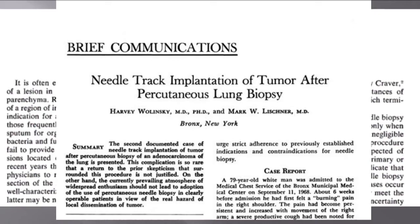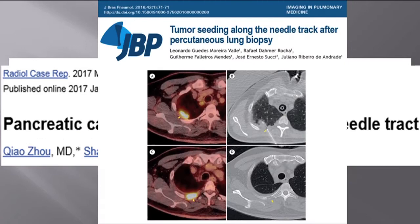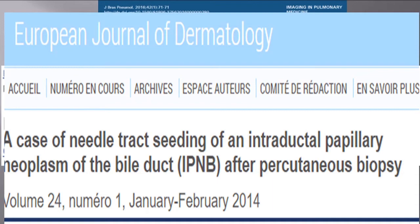The second case report was published in 1969 in the Annals of Internal Medicine, reporting similar findings with seeding after biopsy of a patient that ended up having lung adenocarcinoma. And ever since then there have been numerous case reports — for instance, transitional cell seeding, pancreatic cancer seeding, lung tumor seeding, as well as bile duct. We're not going to go into the details of these various case reports, but you get the idea.